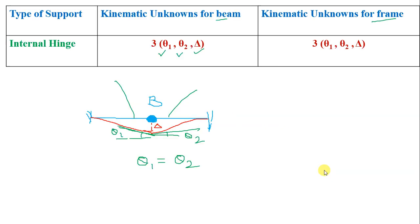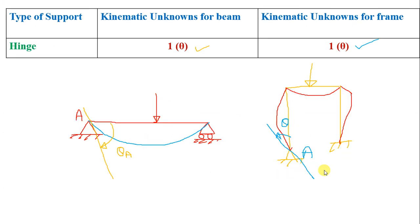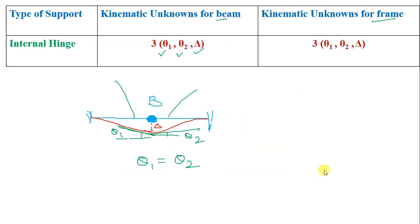So this is all about how to calculate kinematic indeterminacy. To calculate kinematic indeterminacy, we simply have to calculate the number of unknown joint displacements for different members. In the next lecture, we will discuss a few structures and calculate the degree of kinematic indeterminacy for different types of structures. Thank you.